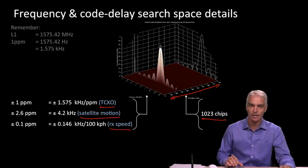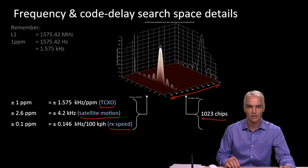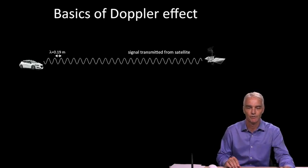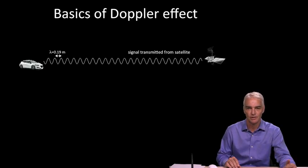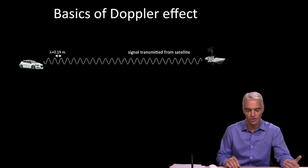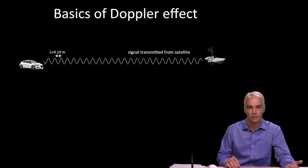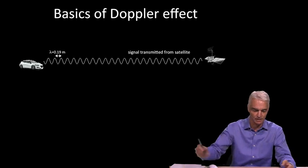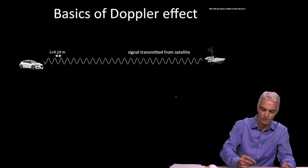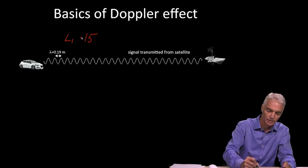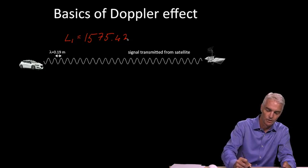Now let's look at the values on the left-hand side and how we get those actual numbers. Here's a quick summary of what we mean by Doppler effect: it's when there's some motion going on and a signal is being transmitted and received. The frequency of L1 — one of the few things you do have to remember — is 1575.42 megahertz.